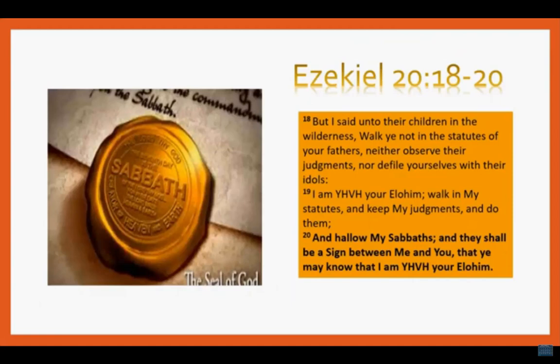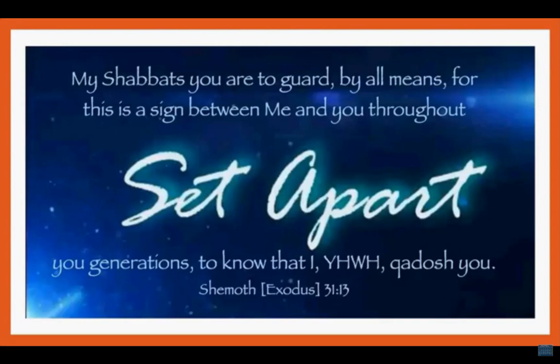Ezekiel 20:18-20: 'But I said unto their children in the wilderness: Walk ye not in the statutes of your fathers, neither observe their judgments, nor defile yourselves with their idols. I am Jehovah your Elohim. Walk in my statutes, and keep my judgments, and do them, and hallow my Sabbath. And they shall be a sign between me and you, that you may know that I am Jehovah your Elohim.' The Sabbath we are to guard, for this is a sign between Jehovah and his people — he says between me and you, throughout your generations, to know that I, Jehovah, set you apart. That word is Kedosh — set apart and made holy. That is from Exodus 31:13.